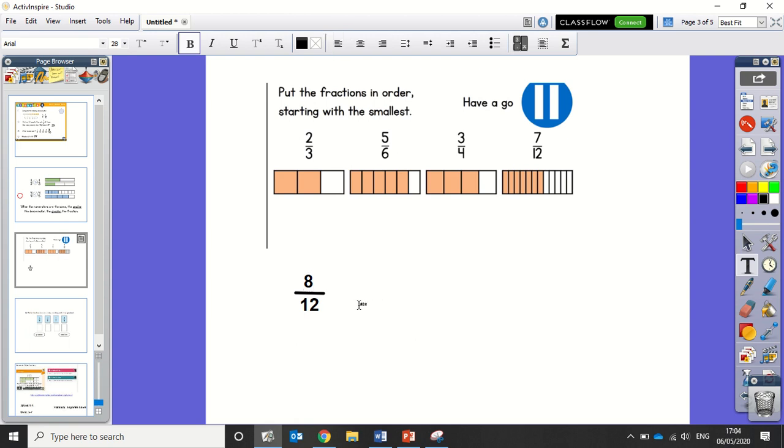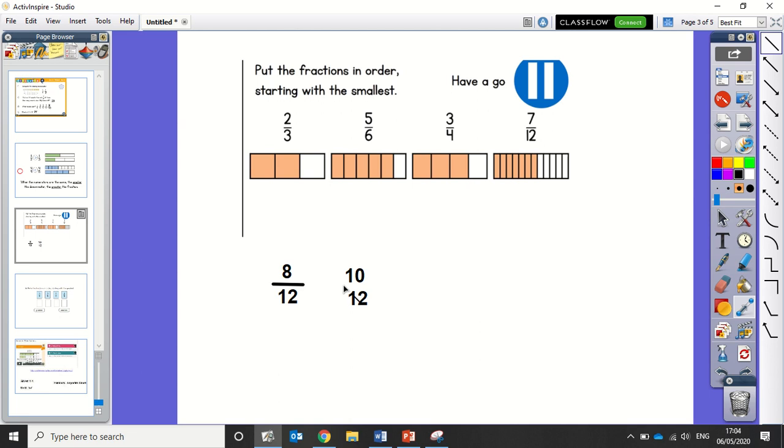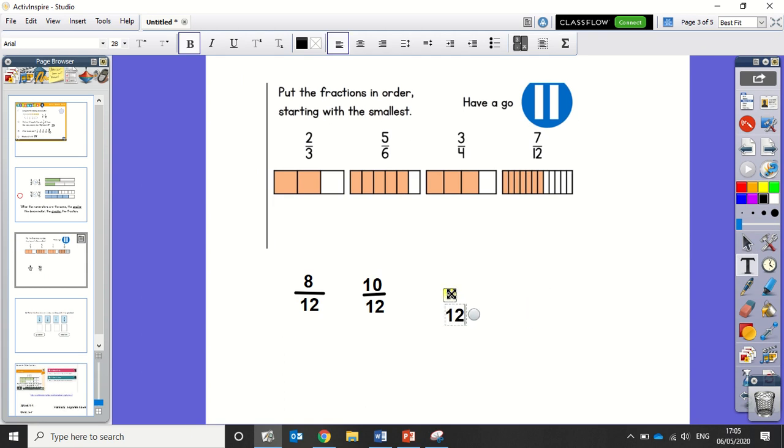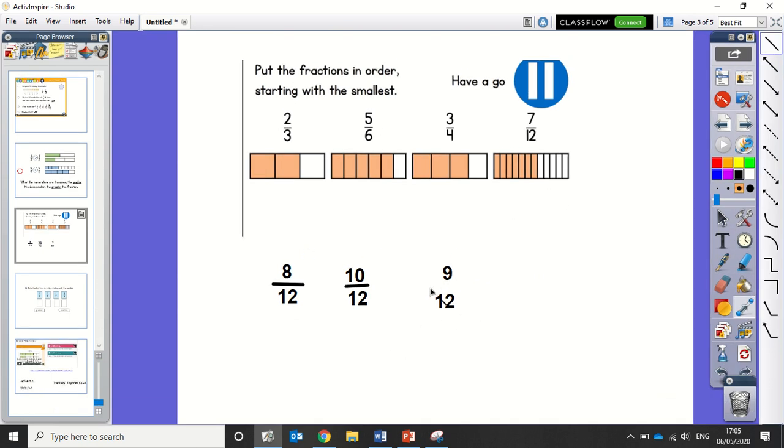6 times 2 gives me 12. Which means I need to do 5 times 2, which gives me 10 twelfths. 4 times 3 gives me 12. 3 times 3 is 9. So here we've got 9 twelfths. And then the last one I don't need to do anything to, because that's already in twelfths.